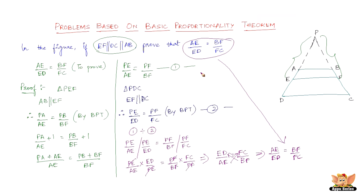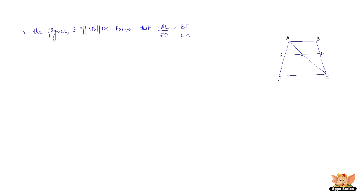Let's quickly solve another problem. Here we have a question where EF is parallel to AB and AB in turn is parallel to DC. We need to prove that AE by ED equals BF by FC. It's the same expression as the last problem but a different figure, and it's going to be simpler — fewer steps. Let's see how.